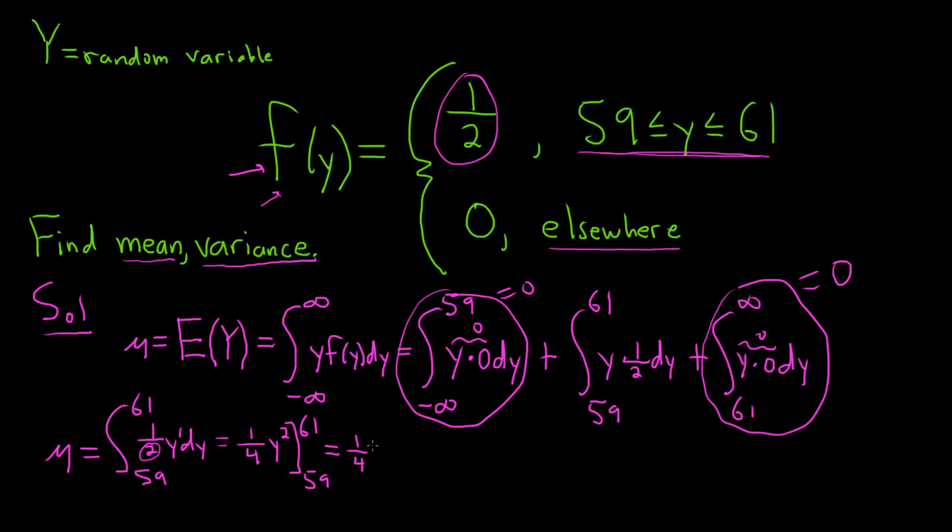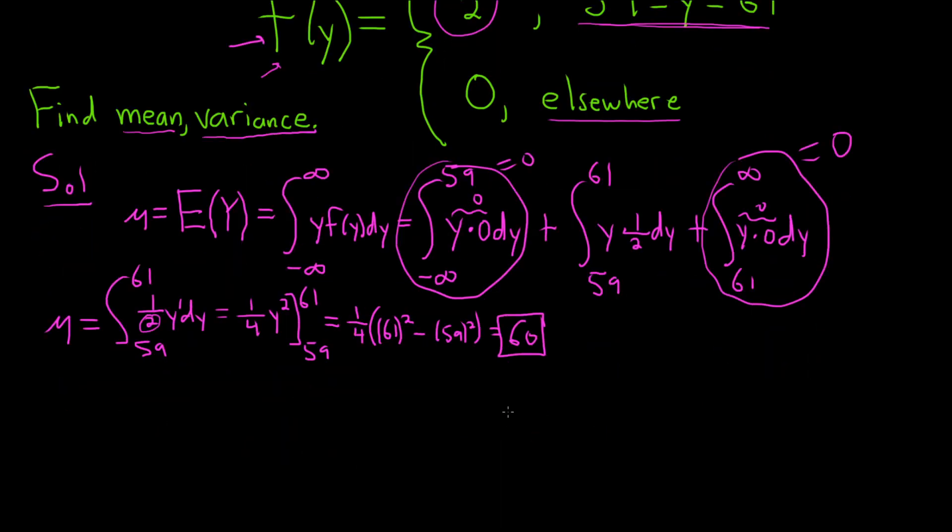We plug in the 61 first, so it'll be 61 squared minus 59 squared. I am totally going to use a calculator to do this because I don't want to do it by hand. 61 squared minus 59 squared, I got 240. Divide that by 4, nice number, I got 60. So the mean is 60 in this case.